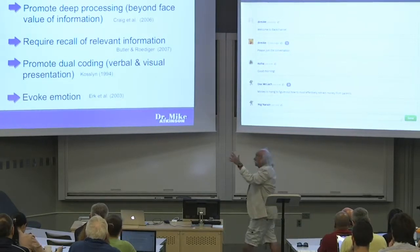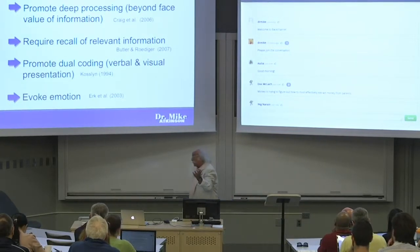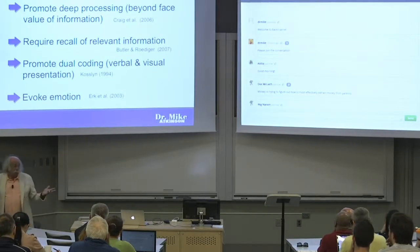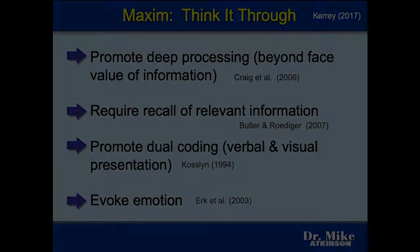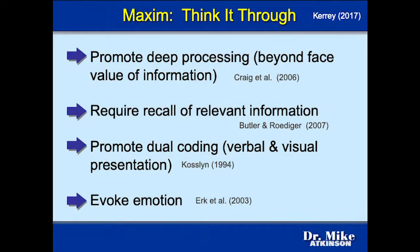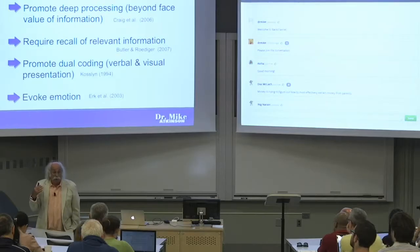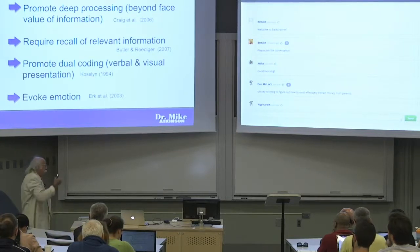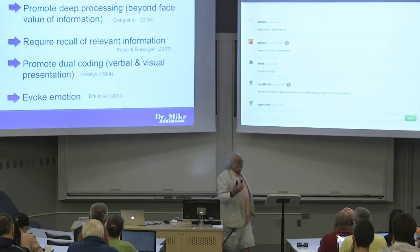Kerry mentions two maxims: think it through and make associations, and there's a bunch of principles for each one. Think it through — promote deep processing, which means it's beyond the face value. Deep processing is cutting down, looking at associations, what this thing means, what it's connected to. That way you're going to remember it better. Craig and Lockhart — these are memory researchers that came up with this — say that it actually gives you better memory.